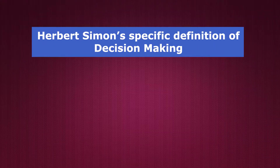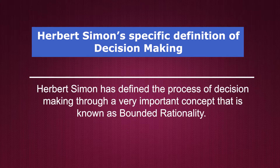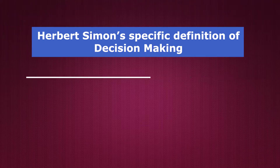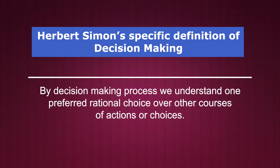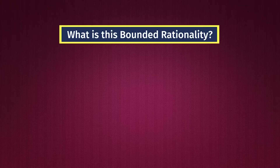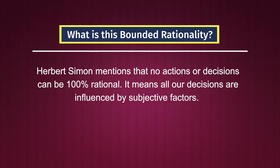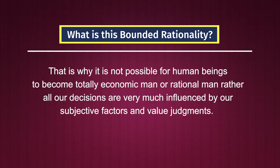We now come to Herbert Simon's specific definition of decision making. Herbert Simon has defined the process of decision making through a very important concept known as bounded rationality. By decision making process we understand one preferred rational choice over other courses of actions. Herbert Simon mentioned that no action or decision can be 100% rational — it means all our decisions are influenced by subjective factors. That is why it is not possible for human beings to become totally rational or economic man.